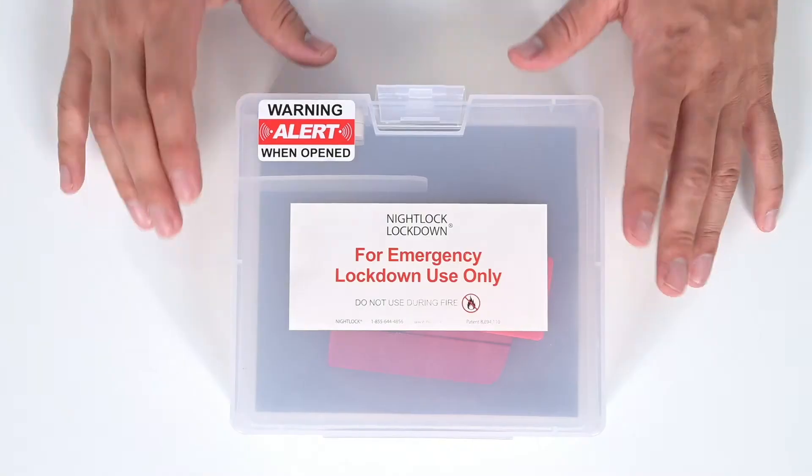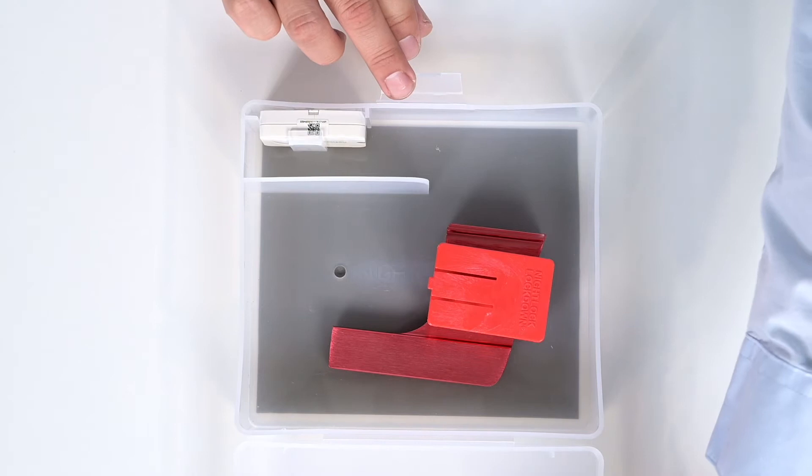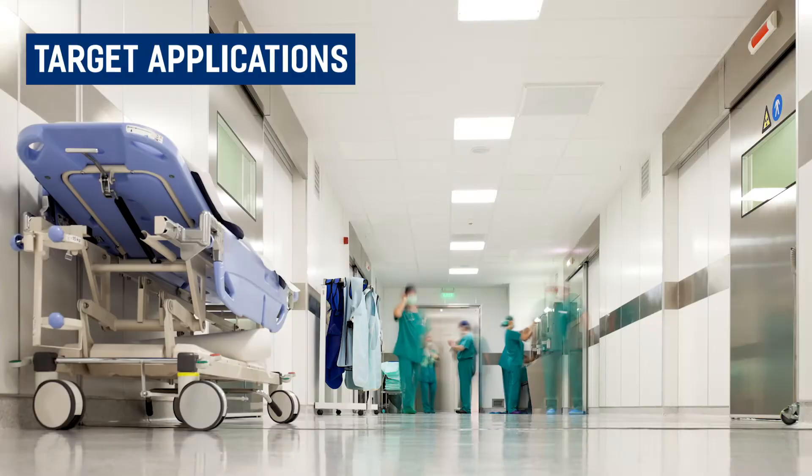The Nightlock Door Barricade Sensor is an emergency lockdown system that increases response time, visibility, and awareness. Simply by gaining access to the locking handle, text alerts are immediately sent. Target applications for this device include school campuses and hospitals.